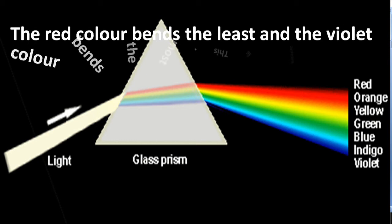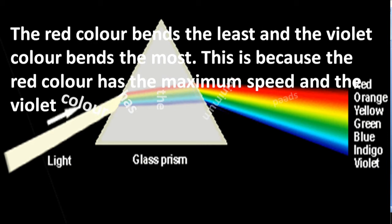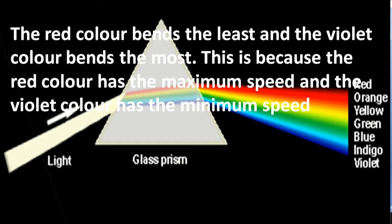The red color bends the least and the violet color bends the most. This is because the red color has the maximum speed and the violet color has the minimum speed in the glass prism.